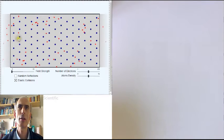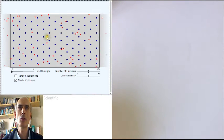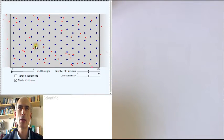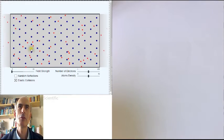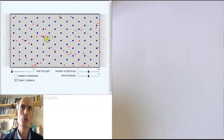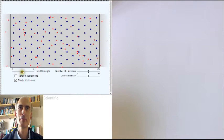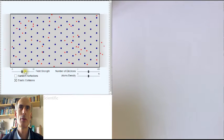If we put an electric field across this conductor, then these electrons would experience a force in one direction, in this particular case from left to right, and they would all start moving this way. I'll increase the field strength.